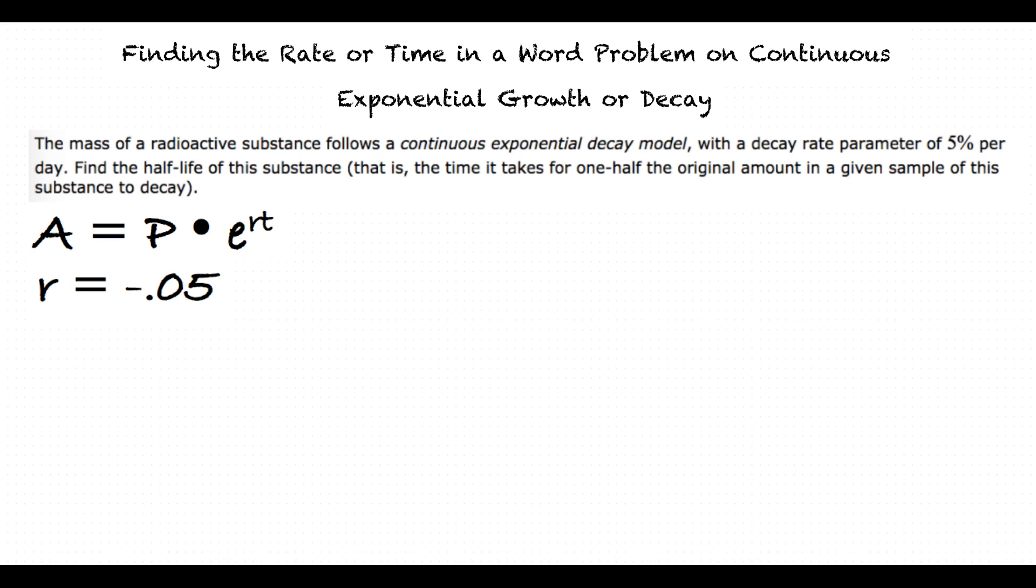Exactly, and since we are looking for the point where there is one-half of the substance remaining, we can say that A equals one-half P, and thus our equation reads: one-half P equals P times e raised to the negative 0.05t. Next, we divide both sides by P to cancel it out, right? Yes.